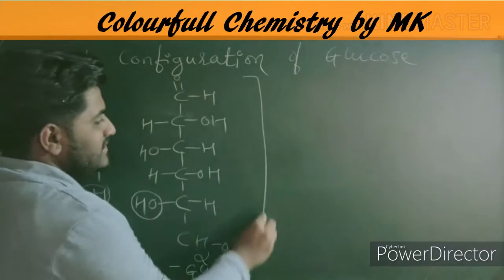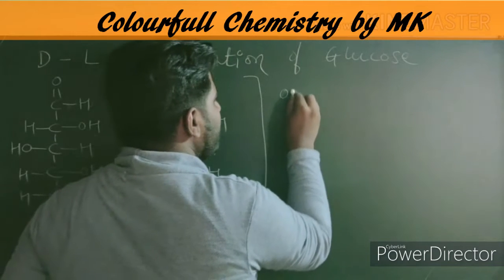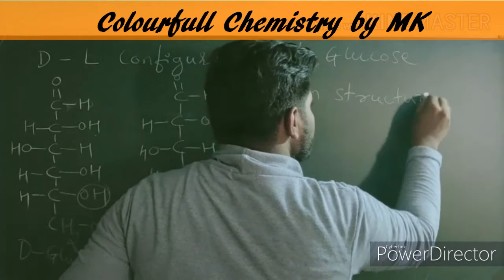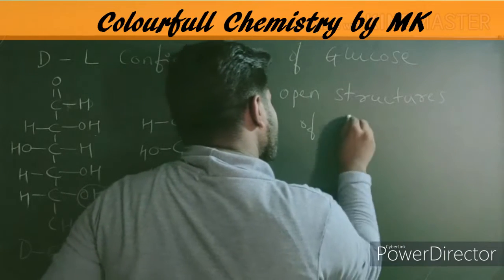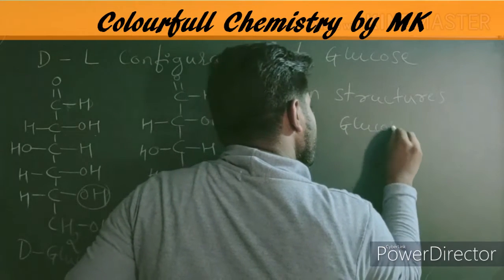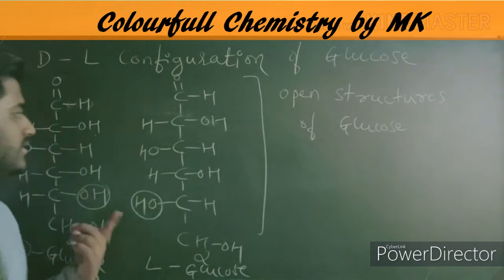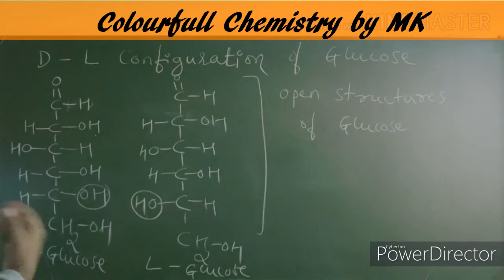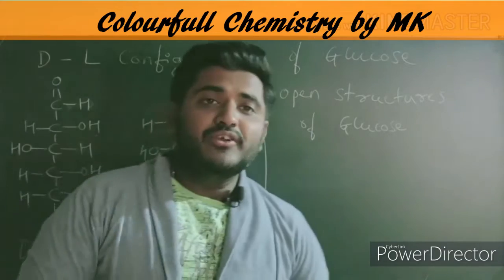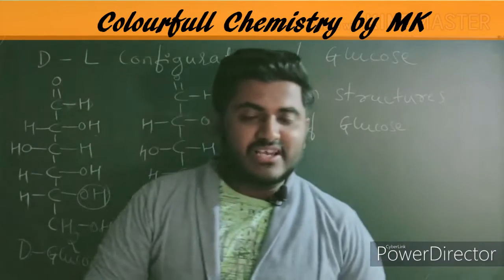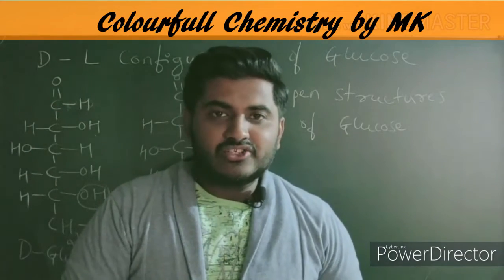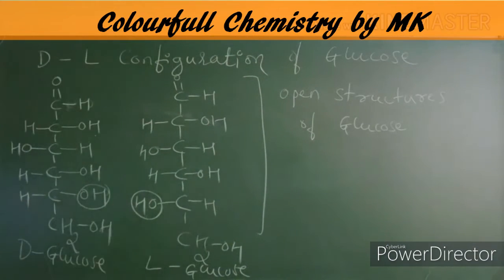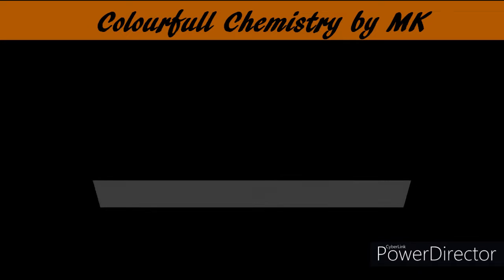These two structures — D-glucose and L-glucose — are also called the open structures of glucose. Next, we are going to discuss open structure, cyclic structure, and Haworth structure of glucose.